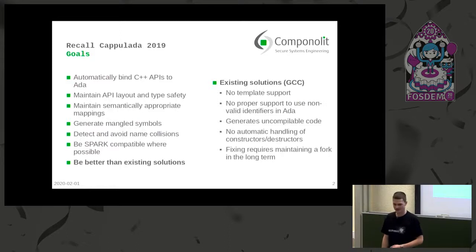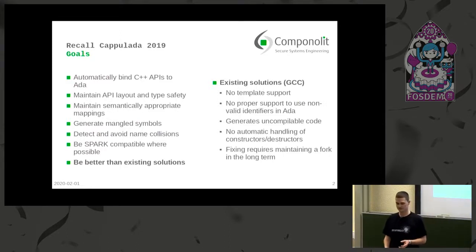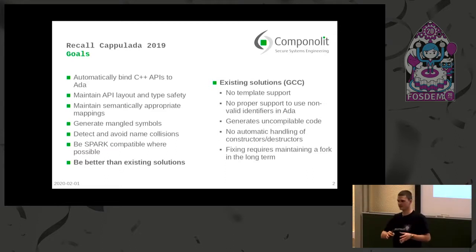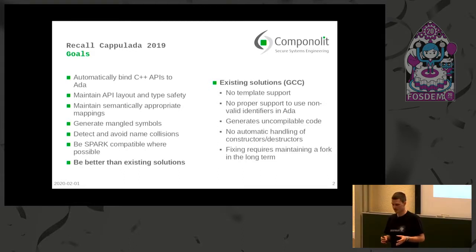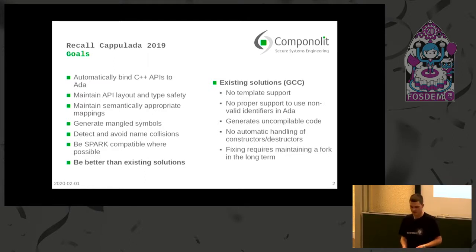So what did we say? We wanted to be better than existing solutions. We wanted to maintain the original C++ API layout. We wanted to have type safety. We wanted to have template support, because this is what most of the existing solutions were lacking. And for this we also had to implement things like C++ name mangling and so on.